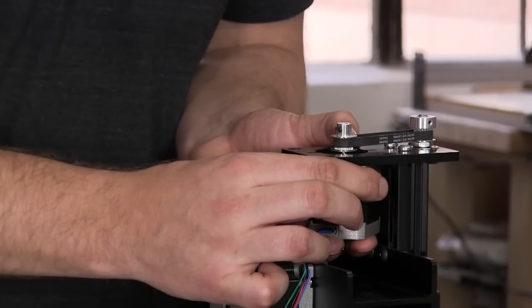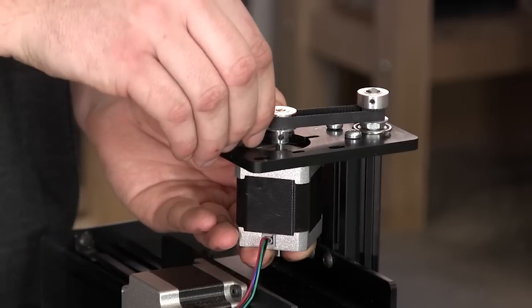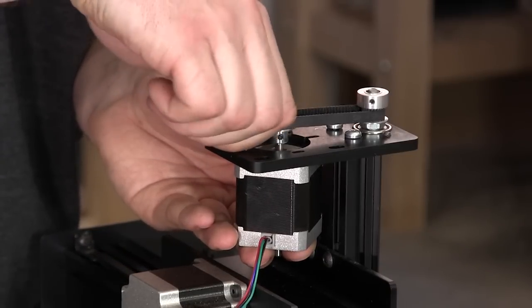Finally we'll use small screws and washers to attach the NEMA 17 to the Z-axis plate. Insert all of the screws to mount the motor finger tight.